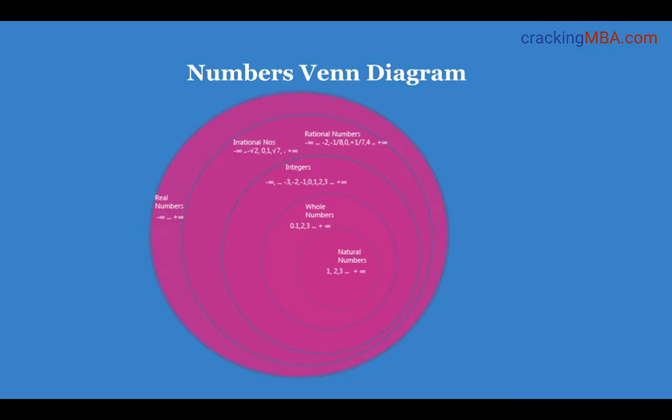Here we have the Venn diagram which represents the hierarchy of numbers. If you see in the center of this diagram it has the natural numbers and above that is the whole numbers which includes all the natural numbers with a zero added to it.